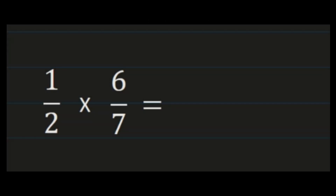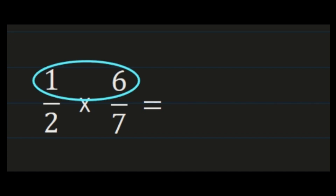For our first example we have 1 half times 6 sevenths. Our first step is to multiply our numerators together. Our numerators are 1 and 6. 1 times 6 is 6, so 6 becomes the numerator in our product.